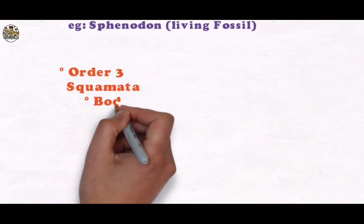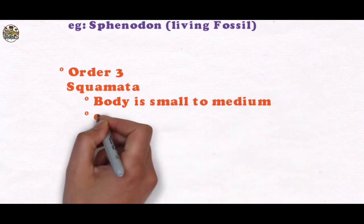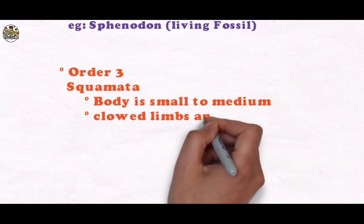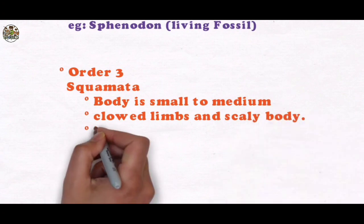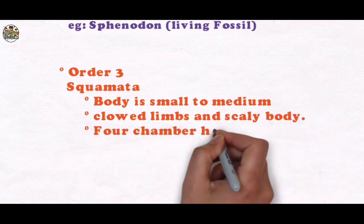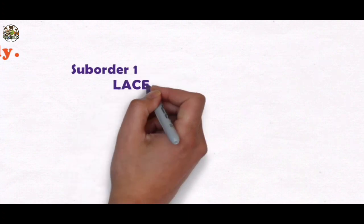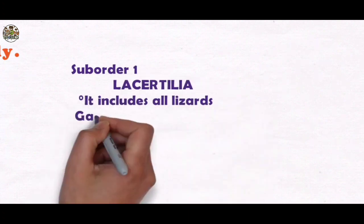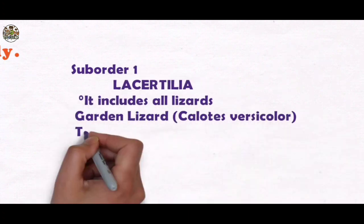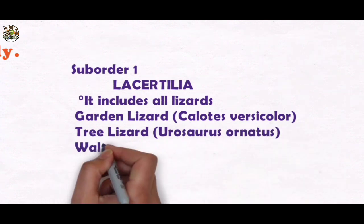Order 3: Squamata. Squama means scale. Body is small to medium, clawed limbs and a scaly body, four-chamber heart. They have acrodont teeth. It includes two suborders. Suborder 1: Lacertilia - it includes all lizards: garden lizard, tree lizard, and wall lizard.